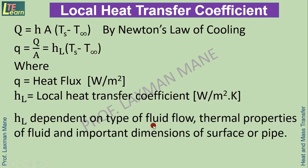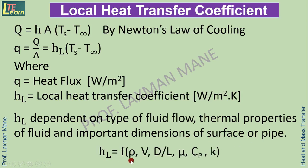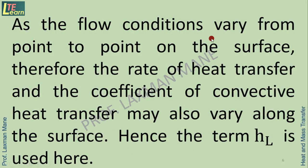HL is dependent on the type of fluid flow, thermal properties of fluid, and important dimensions of the surface or pipe over which flow is taking place. So HL is a function of rho (density), V (velocity), T and L (dimensions), mu (viscosity), Cp (specific heat), and K (thermal conductivity). As flow conditions vary from point to point on the surface, the rate of heat transfer and the convective heat transfer coefficient may also vary along the surface — hence the term HL is used.